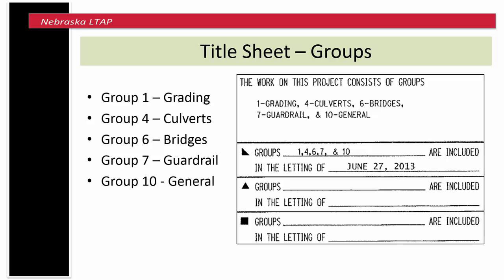On the right hand side of the title sheet are the groups that make up this project. There is a number for each group and the name of the group for each item. We will discuss the groups more when we look at the Summary of Quantities sheet.